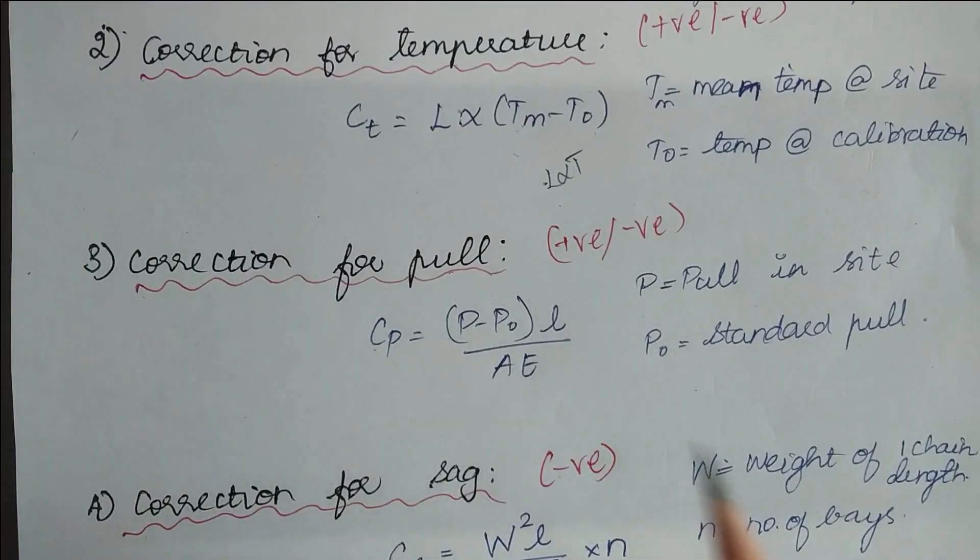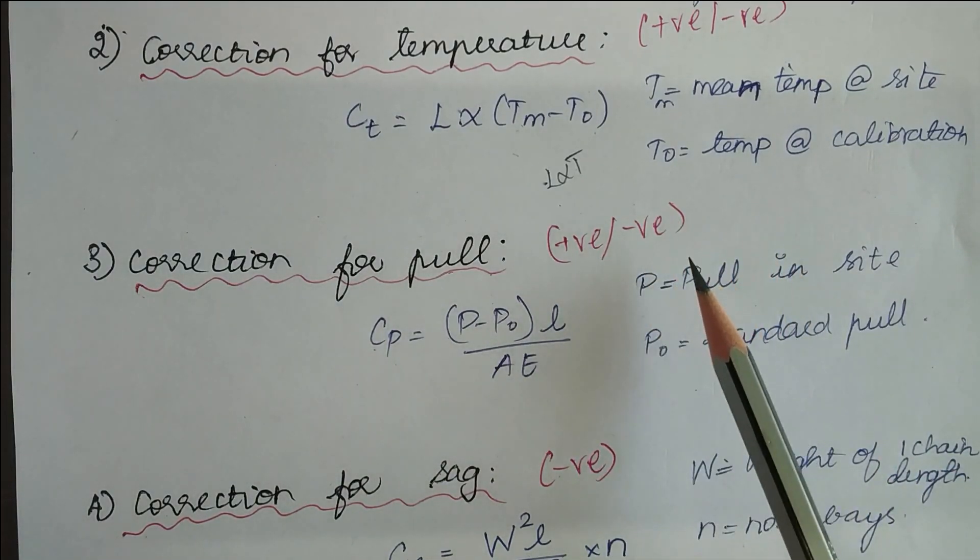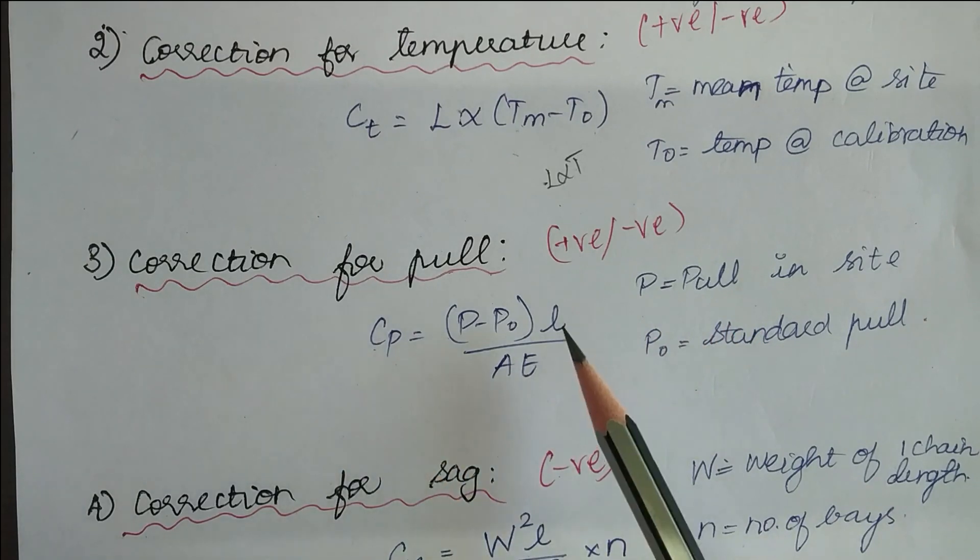Next is correction for pull. Like temperature, this also has a positive and negative correction. The formula is (P minus P0) times L divided by AE, where P is pull in the site and P0 is the standard pull that has to be applied to the chain or the tape.